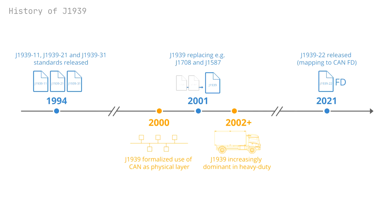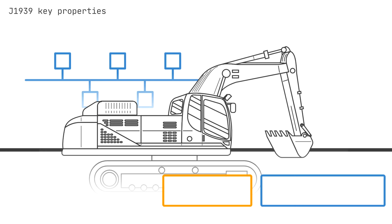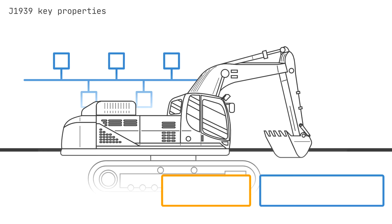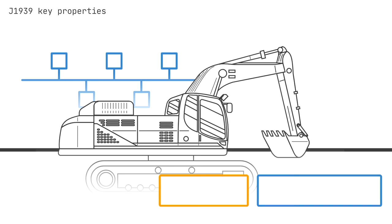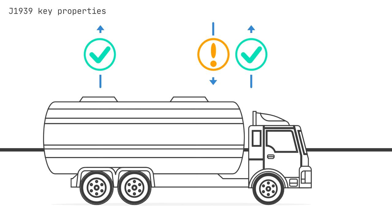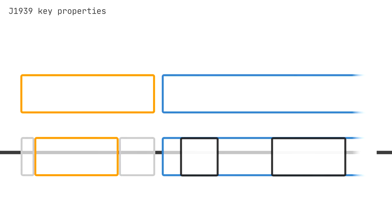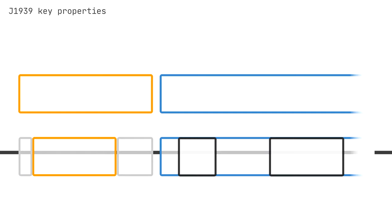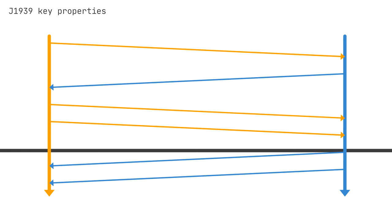To better understand J1939, let's look at some of the key properties of the standard. First, the J1939 baud rate is typically 250K, though more recently with support for 500K. Further, the J1939 CAN identifier is always extended 29-bit, aka CAN 2.0B. Second, most J1939 messages are broadcast on the CAN bus, though some data is only available by requesting it via the CAN bus. Third, J1939 messages are identified by 18-bit parameter group numbers, or PGNs, while J1939 signals are called suspect parameter numbers, or SPNs. Finally, multi-byte variables are sent least significant byte first — Intel byte order — and PGNs with up to 1785 bytes are supported via the J1939 transport protocol.